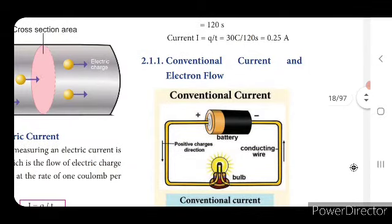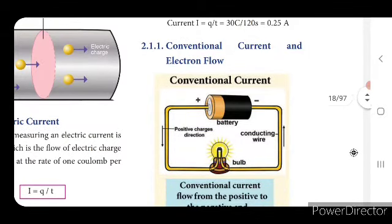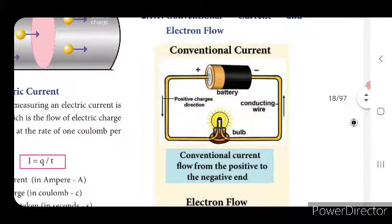Now we will see conventional current and electron flow. In the first diagram, conventional current is shown. You can see a battery with two terminals — positive and negative. The positive terminal is connected to a bulb and the other end of the bulb is connected to the negative terminal. The conventional current flows from the positive to the negative end.